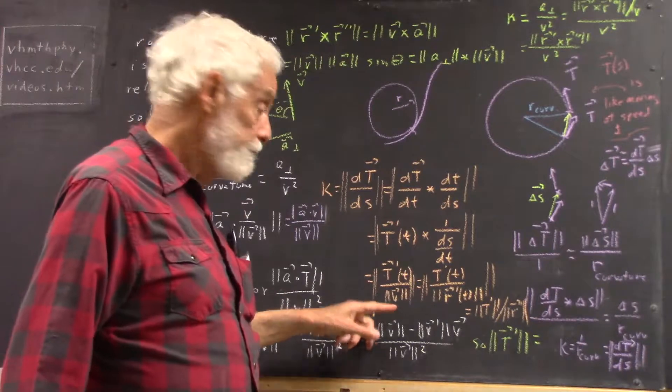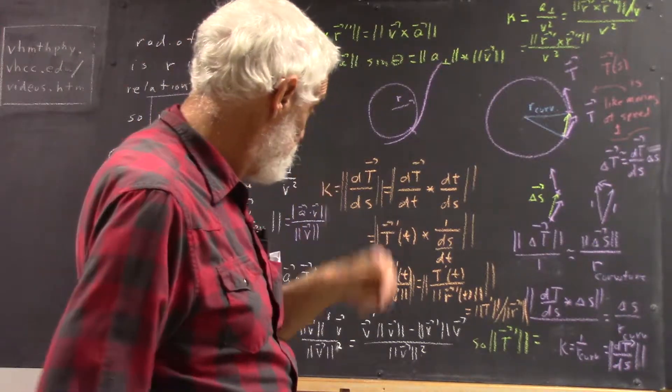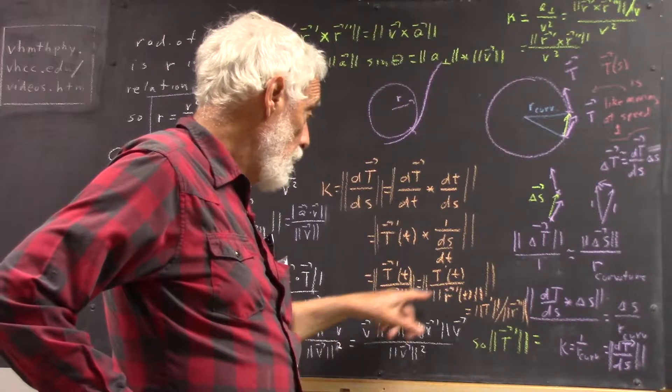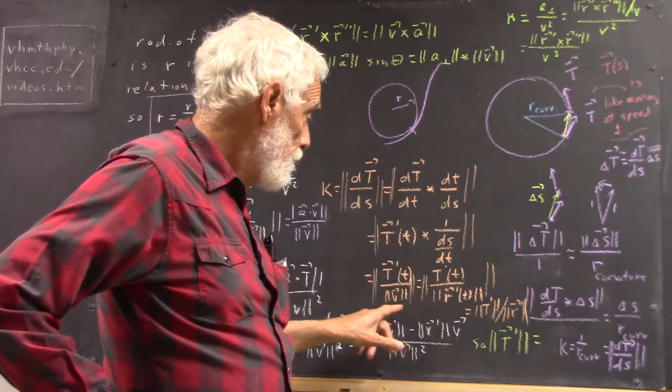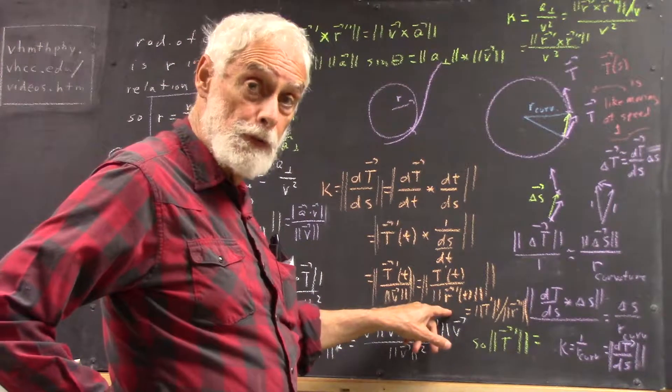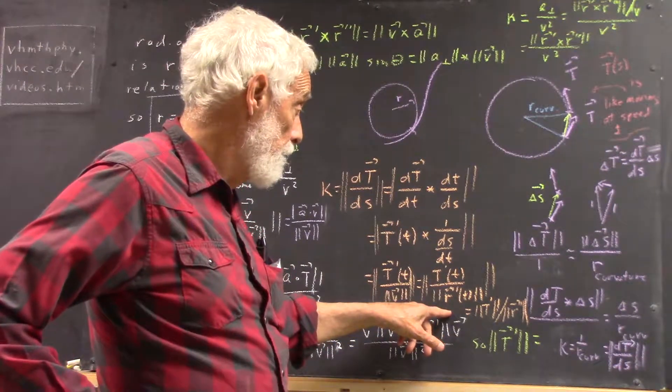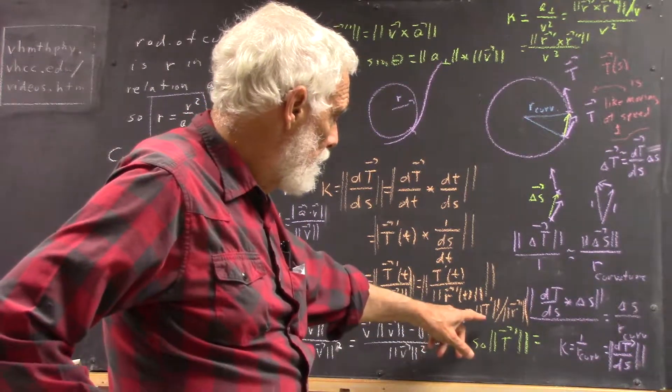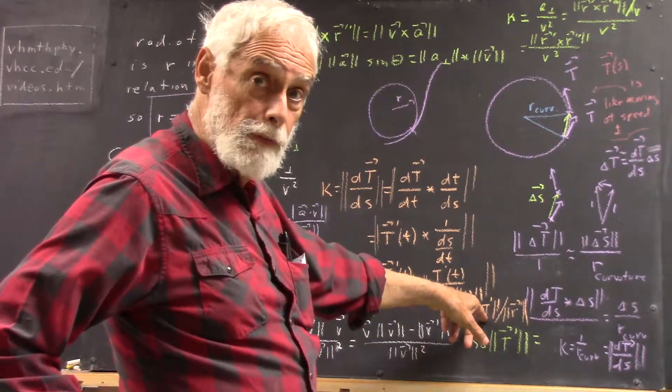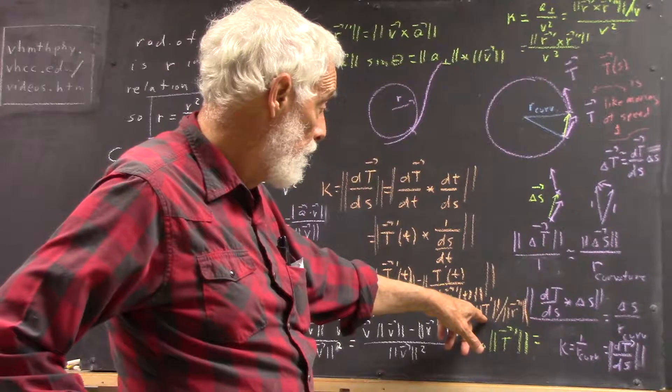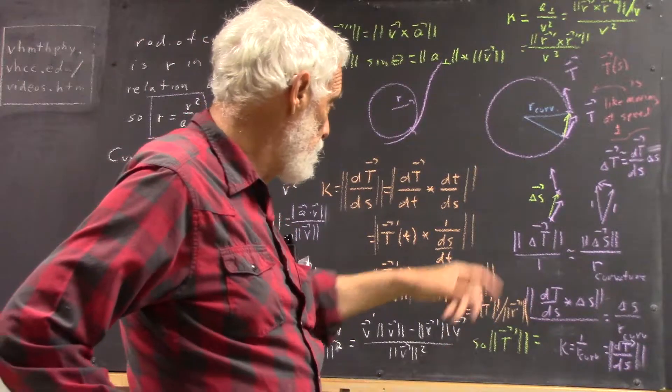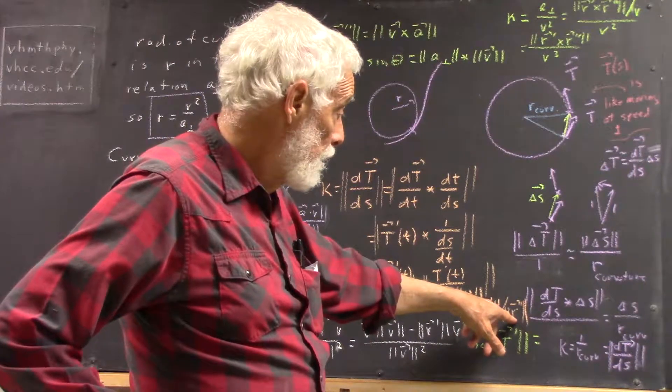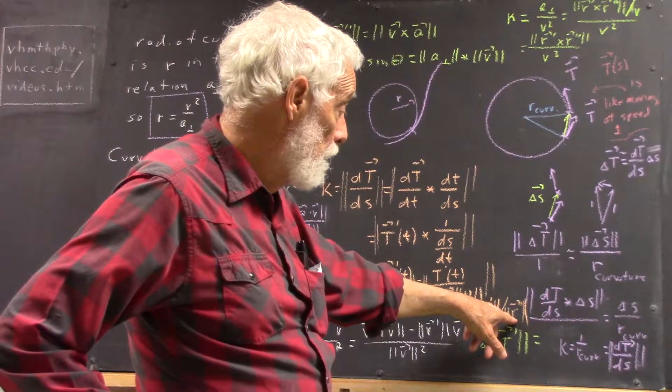This calculation is the same as this, of course, since our velocity is the derivative of our position function, r of t. So we say that then our curvature is the magnitude of the derivative of our unit tangent vector, and that's with respect to t divided by the magnitude of the derivative of our position function.